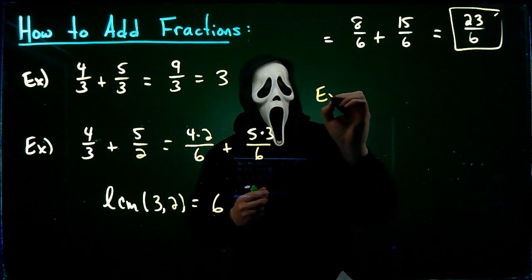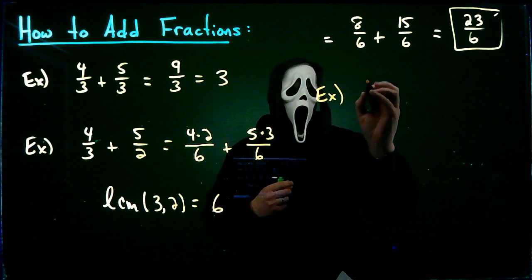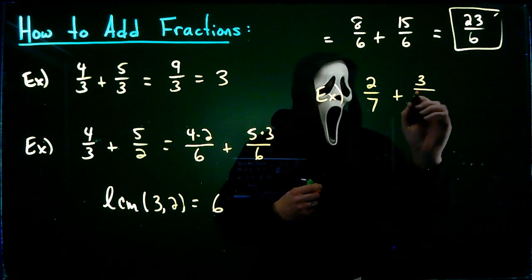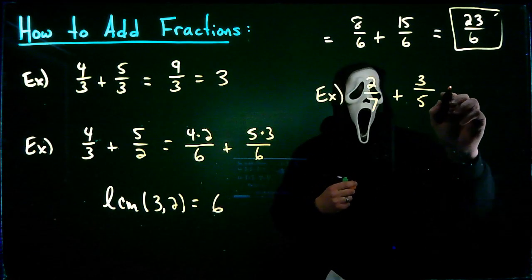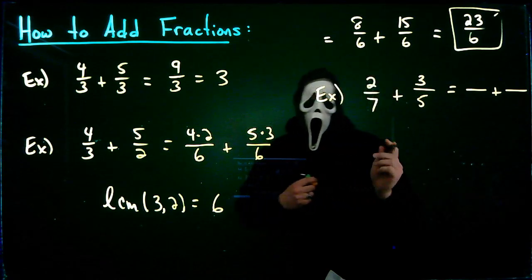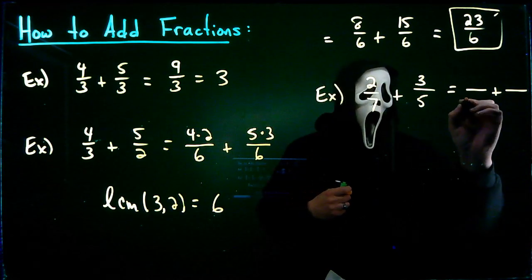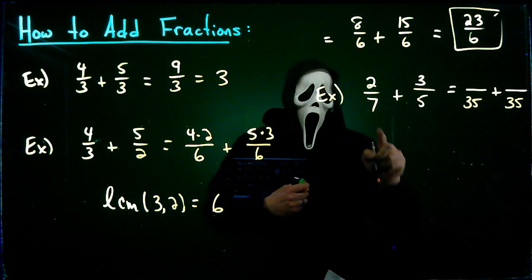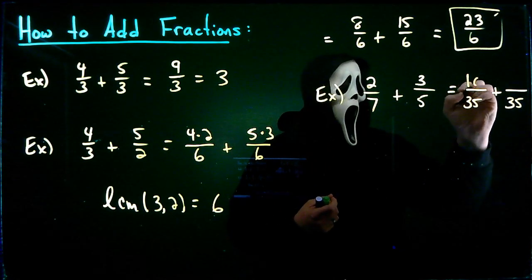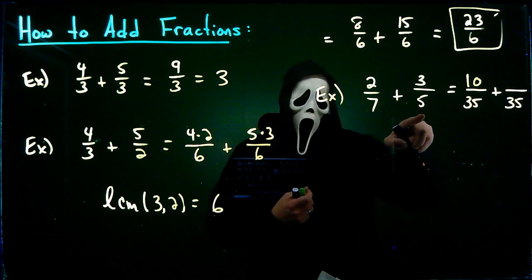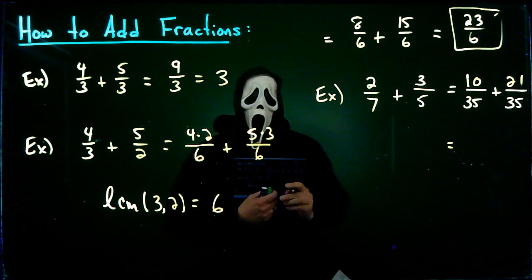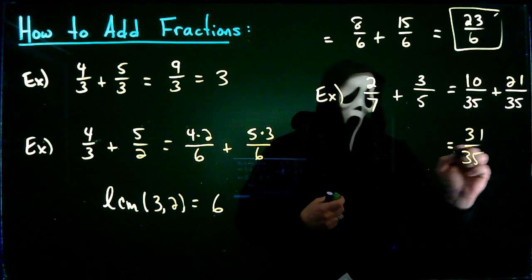Let's do one more example. Let's say 2 sevenths plus 3 fifths. What we need to do is find the least common multiple of 7 and 5. The least common multiple of 7 and 5 would be 35. So what do I multiply 7 by to get 35? Well, I multiply it by 5. Multiply the top by 5 as well. So 2 times 5 would be 10. For the second fraction, what do I multiply 5 by to get 35? It would be 7. Multiply the top by 7. So 7 and 3 would be 21. And then go ahead and add the fractions, which would give me 31 over 35.